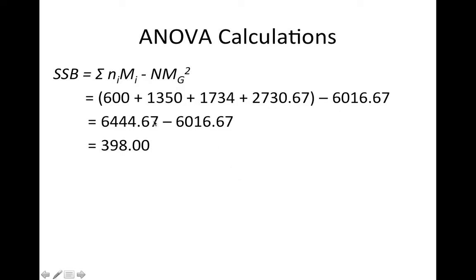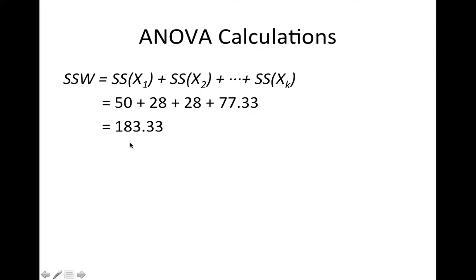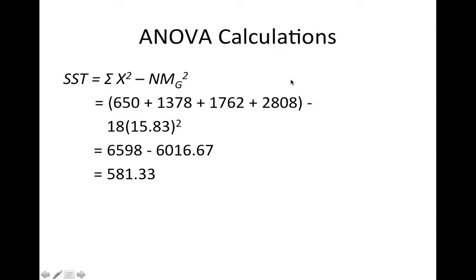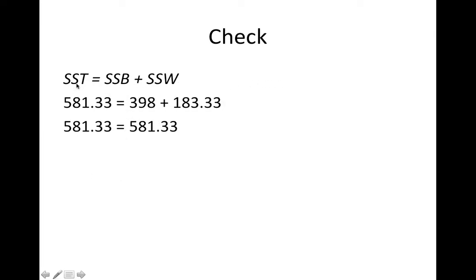Then using those terms, I can calculate sum of squares between, which is just the sum of all these n times the mean squared. I think that's wrong. I think that needs to have a square on it. And what we get is we get 398. I calculate sum of squares within, where I just add the intermediate sum of squares, 183, and then I calculate sum of squares total. Now it should be that the sum of squares total equals the sum of squares between plus sum of squares within, and it does.